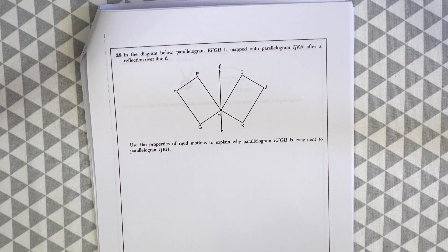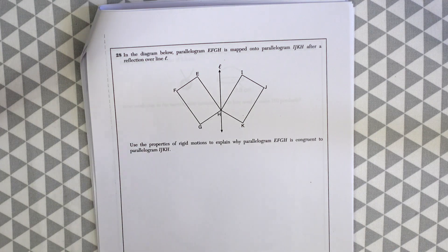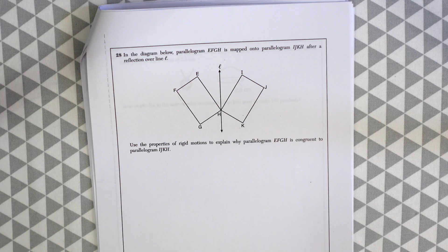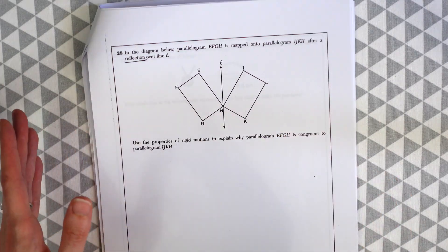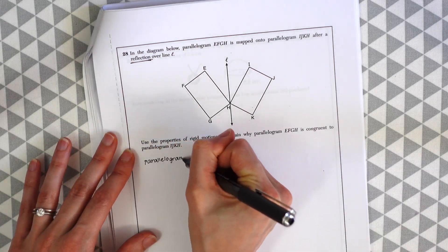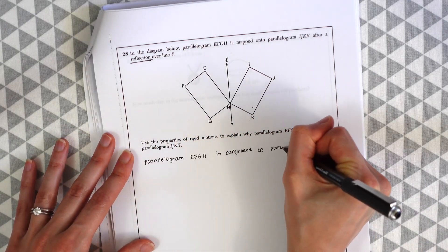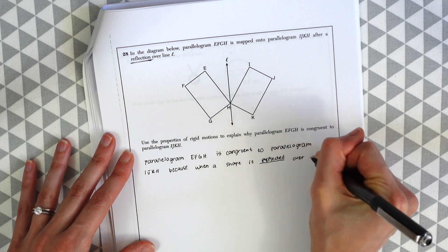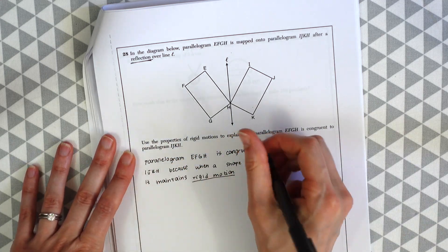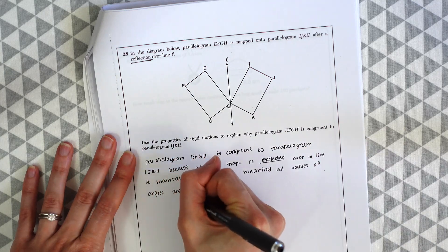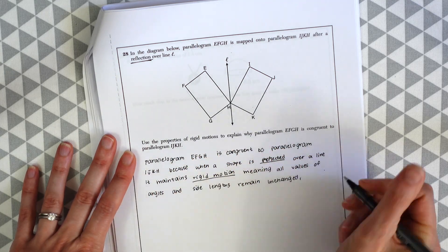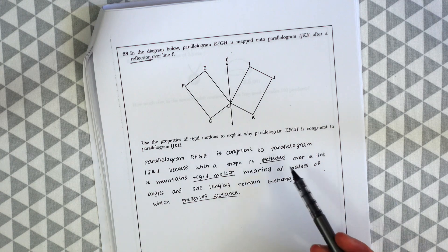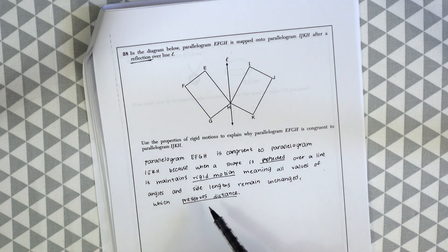Use the properties of rigid motions to explain why parallelogram EFGH is congruent to parallelogram IJKH. So whenever we reflect something, it always preserves distance between the side lengths of the shape and the angles between the shape. It maintains rigid motion with this transformation, with reflections. We can write that out.